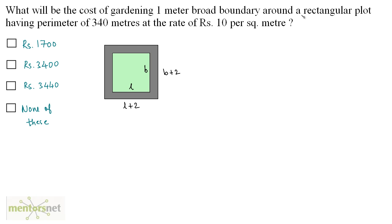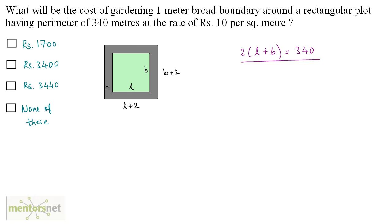We have been given that the perimeter of the plot — the garden — is 340 meters. The formula for perimeter is twice of L plus B, and that is given as 340 meters. To calculate the cost of gardening the boundary, we first need to calculate the area of this boundary by subtracting the area of the inner rectangle from the outer rectangle.